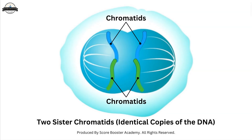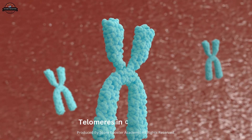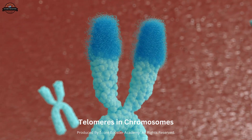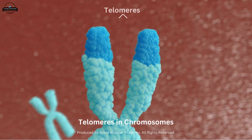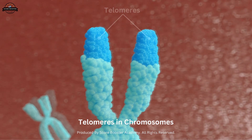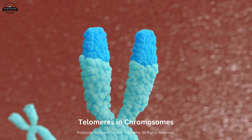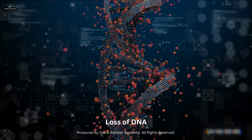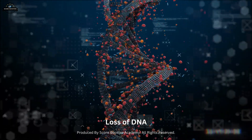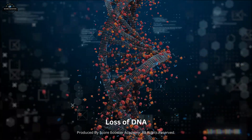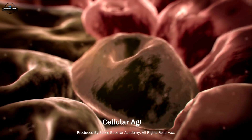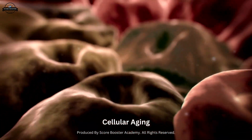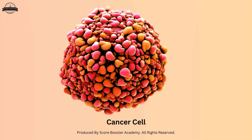At the ends of chromosomes, there are specialized regions called telomeres. Telomeres serve to protect the vital genetic information by preventing the loss of DNA during replication. They also play a role in cellular aging and have implications in diseases such as cancer.